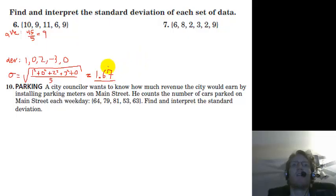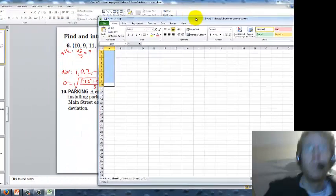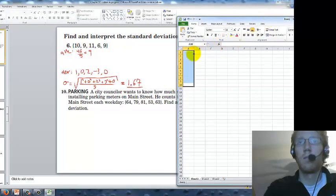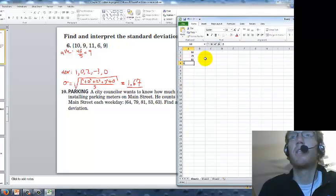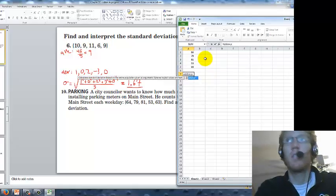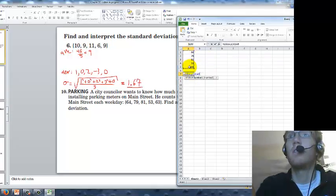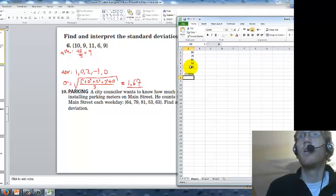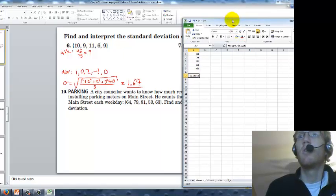I want to show you guys how you can do this using Excel. Let's do this number 10. We can use Excel to do this by typing in the data here first. We type in 64, 79, 81, 53, and 63. Then we can type equals STDEV dot P. This stands for Standard Deviation of a Population. Open parentheses, highlight this stuff here, close parentheses, hit equals. And then it gives us our standard deviation almost instantly.